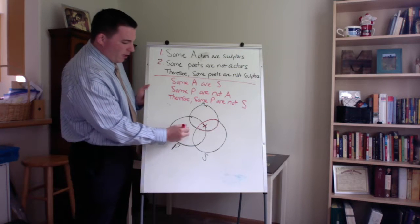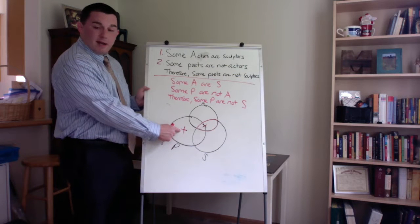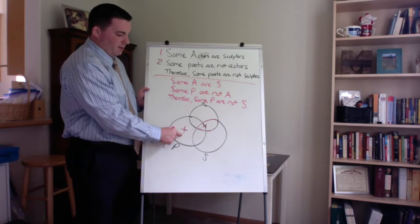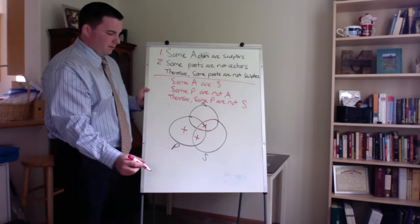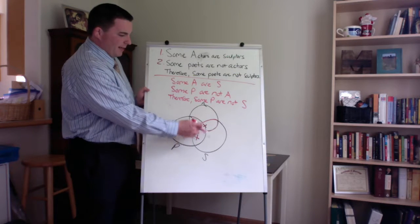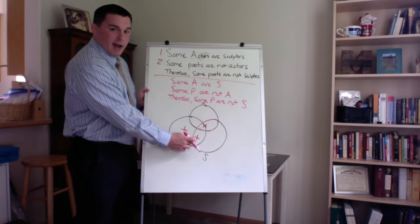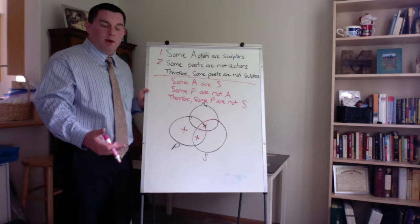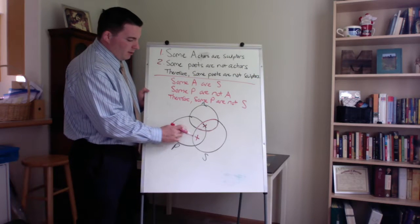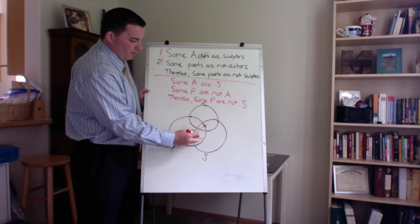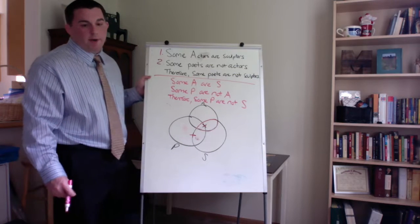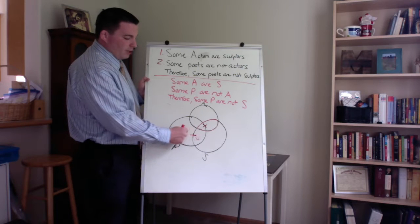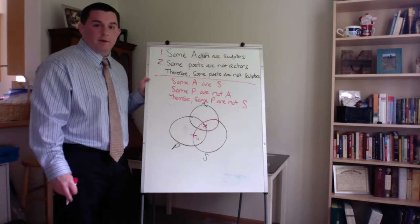So again, we could put it here, that same P exists, but it's outside of A, it's not an A. Or we could put it here, one P exists that's outside of A, but here we're saying it's an S, here we're saying it's not an S. Well, we really don't know, we don't have enough information. So in this case, like before, we want to put it right on the line. And that tells us it could go into either section of the circle there.